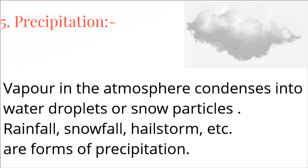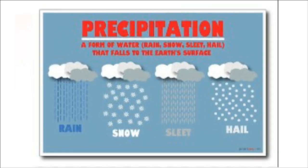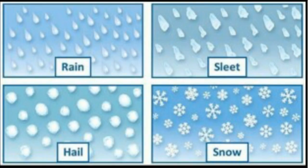Air with higher temperature holds a greater amount of moisture. Precipitation — vapour in the atmosphere condenses into water droplets or snow particles. A form of water like rainfall, snowfall, sleet, or hail that falls to the earth's surface is called precipitation. Rainfall, sleet, hailstorm, and snowfall are all forms of precipitation.